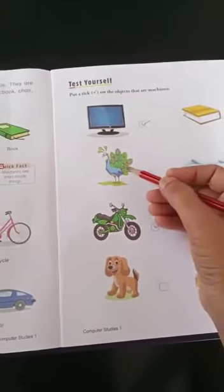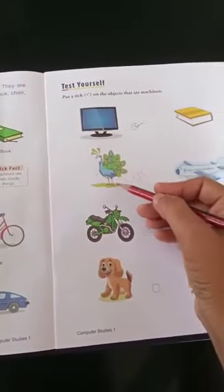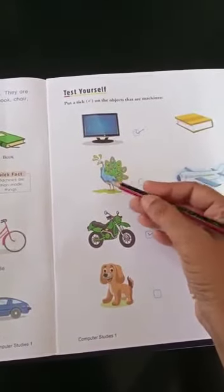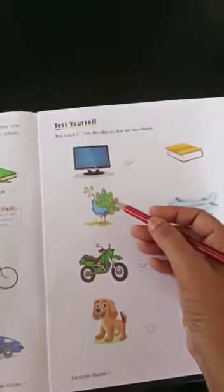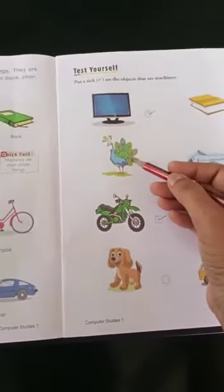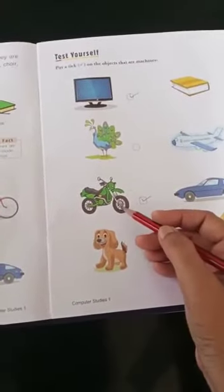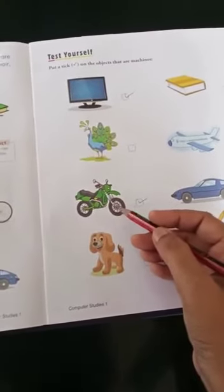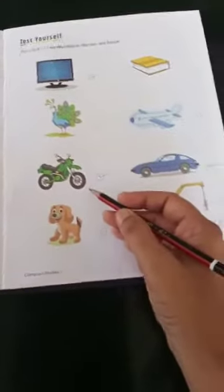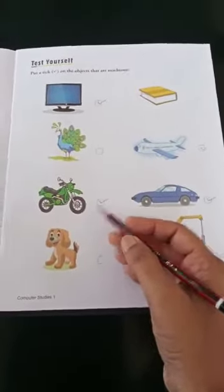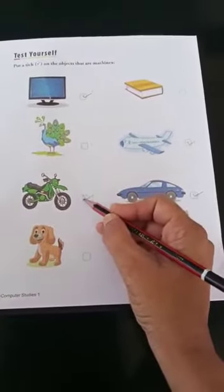Next one, what is the picture? It is a peacock. So this is not a machine. Next one, this is a motorbike. Is it a machine? Yes, this is a machine. So you put a tick mark here.